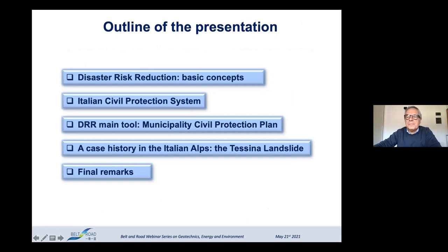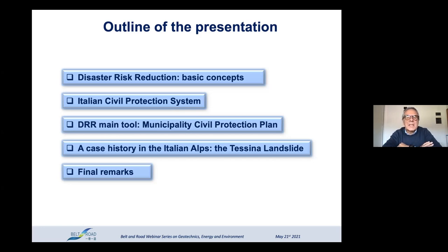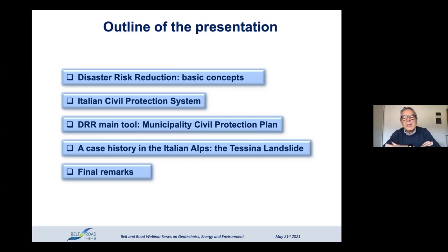The outline of my presentation covers: first, some basic concepts about disaster risk reduction; then I will illustrate the Italian civil protection system, which is the main actor of DRR in Italy; followed by the main tool of disaster risk reduction — the civil protection plan that municipalities must adopt; and finally the Tessina landslide case history, one of the largest landslides in Europe affecting some villages.